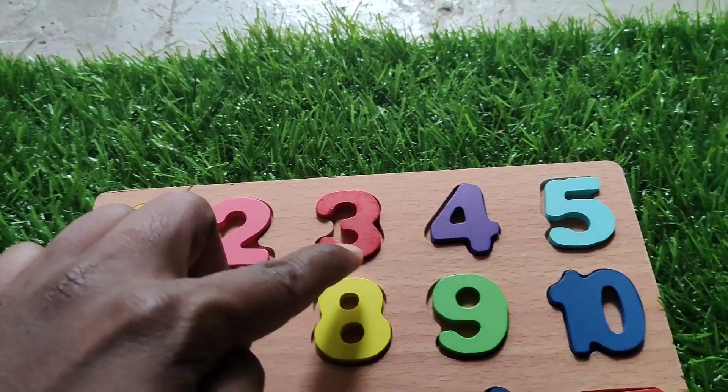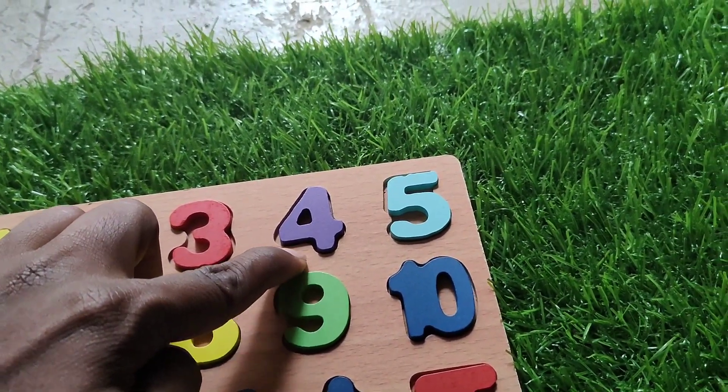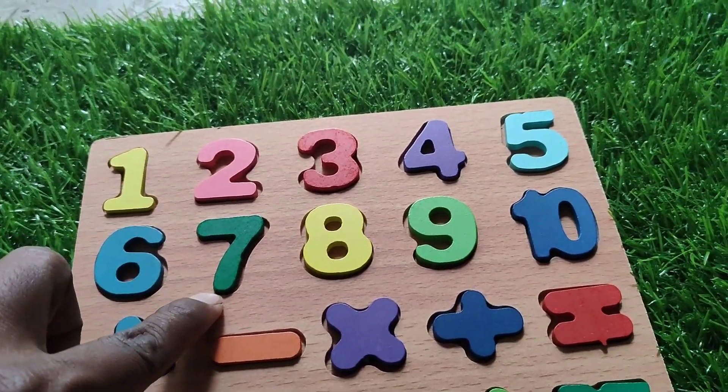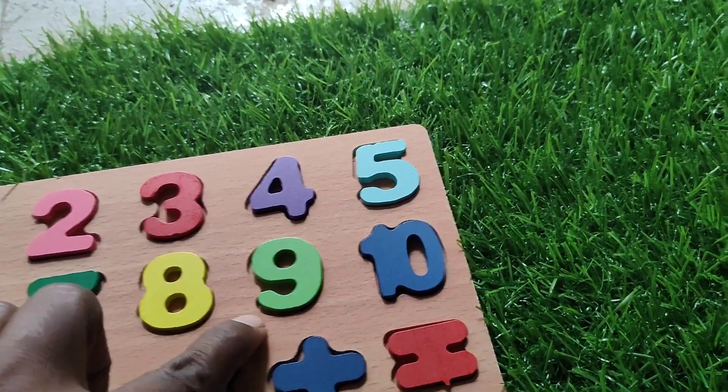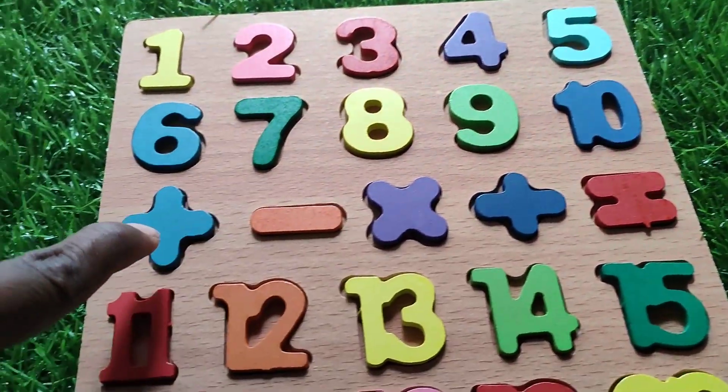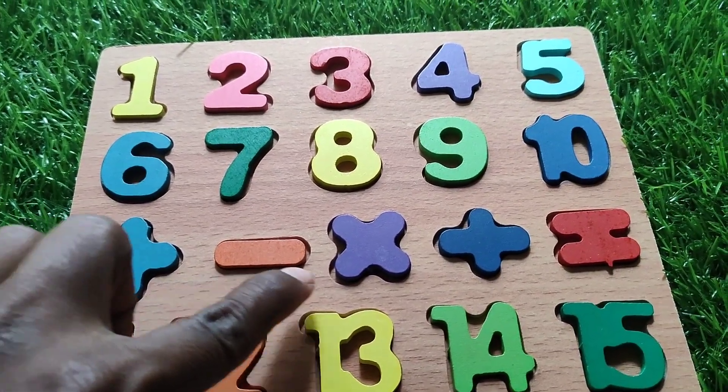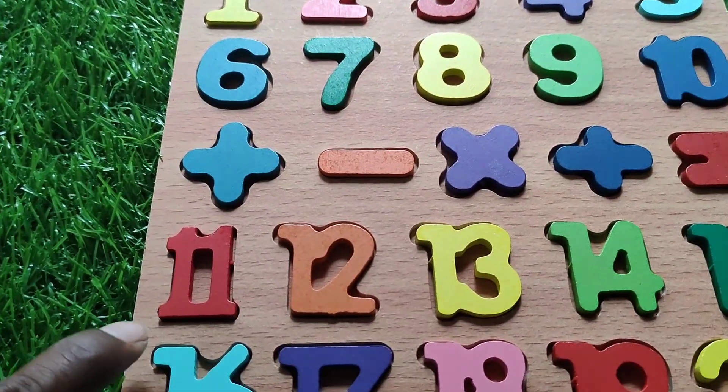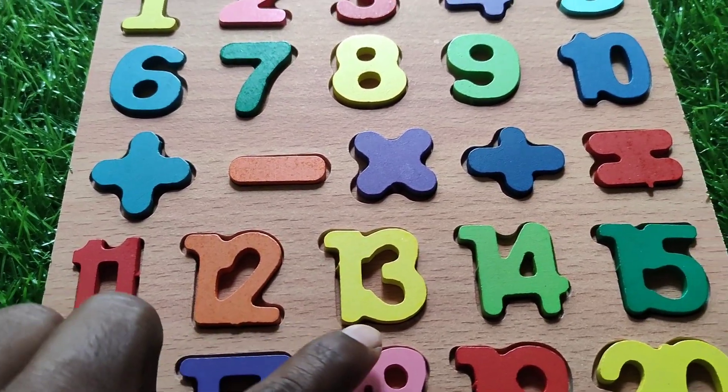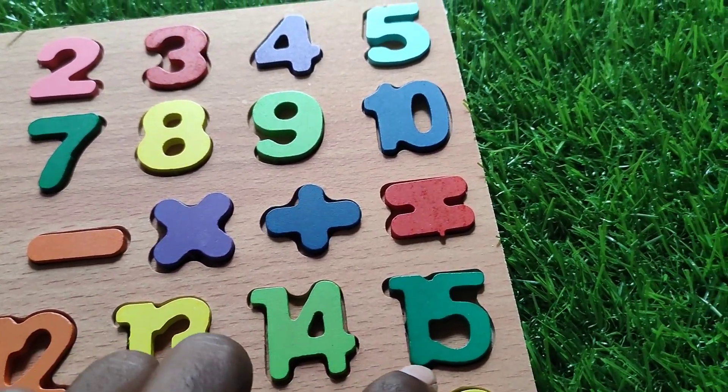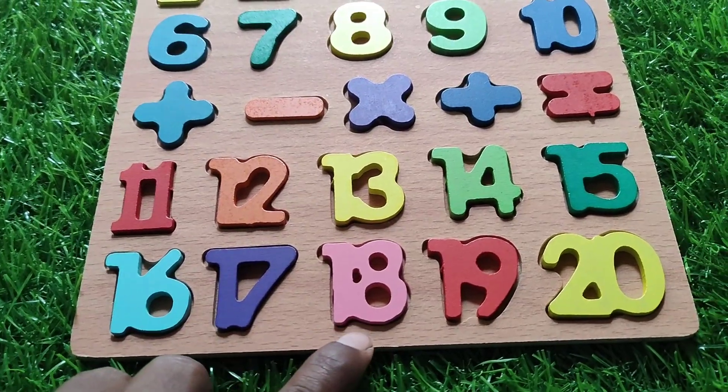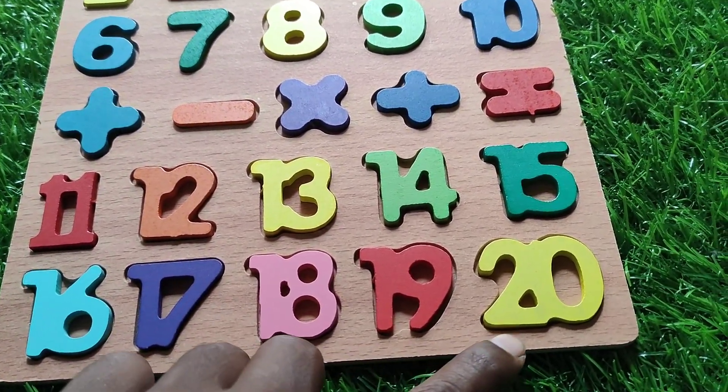Let's say again: 1, 2, 3, 4, 5, 6, 7, 8, 9, 10. This is plus, minus, into, percent, equals. 11, 12, 13, 14, 15, 16, 17, 18, 19, 20.